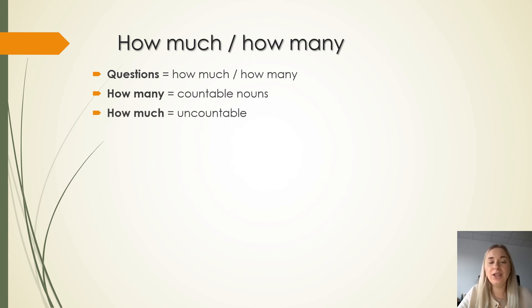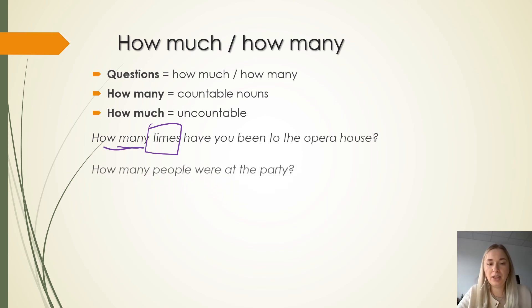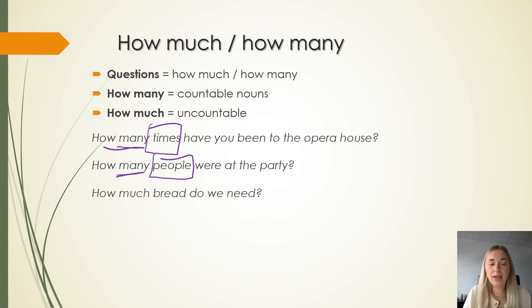How many times have you been to the opera? So times is something you can count: once, twice, three times, hundred times, million times, billion times. That's why you have many. How many people were at the party? People is something you can count, that's why you use many. How much bread do we need? Bread cannot be counted unless you put it in some sort of shape, for example a loaf of bread.